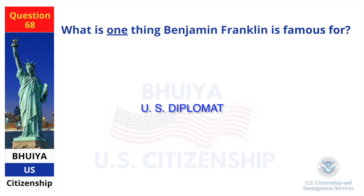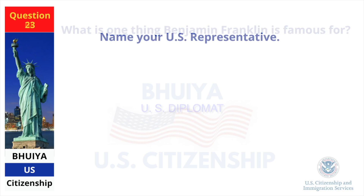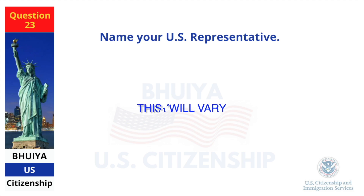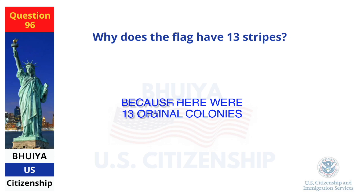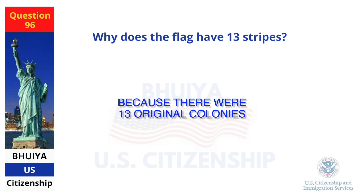What is one thing Benjamin Franklin is famous for? U.S. diplomat. Name your U.S. representative. This answer will vary. Why does the flag have 13 stripes? Because there were 13 original colonies.